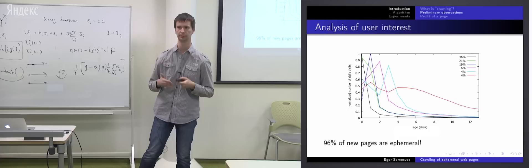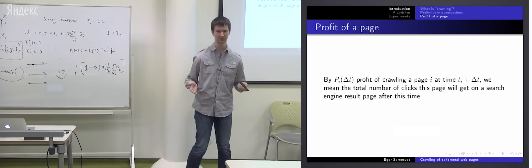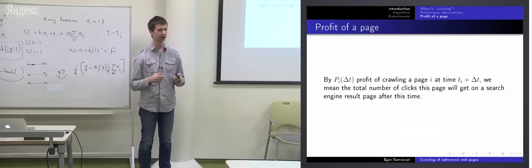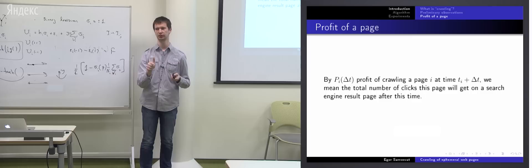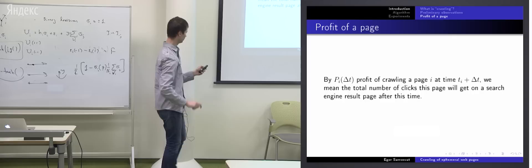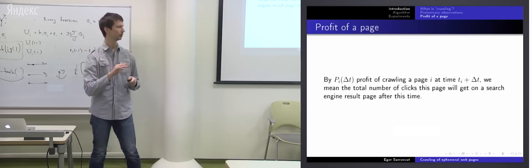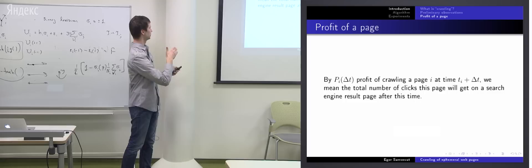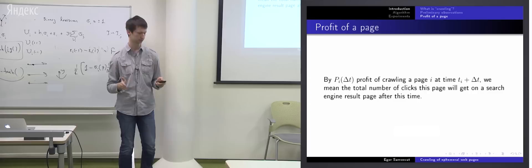Our next goal is to formalize this problem. So let me start with first definition. It's profit of crawling a web page. A natural measure of profit for a search engine of crawling a web page is number of clicks this web page will gather at Yandex search engine results page. And let's denote by p of delta t is number of clicks page will gather if we find it with delay delta t. So it's some decaying function. If you find it just in time, one page will have the maximum amount of clicks. This is profit of a web page. And the goal of the crawler is to maximize this amount of clicks.